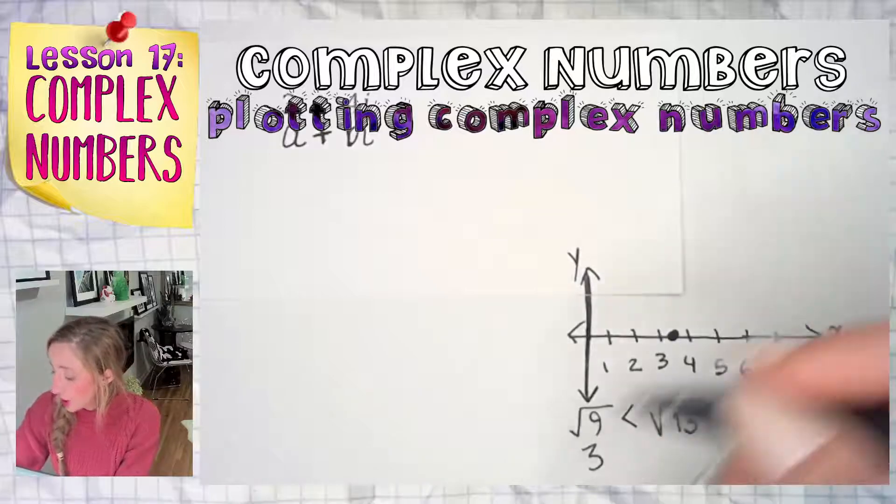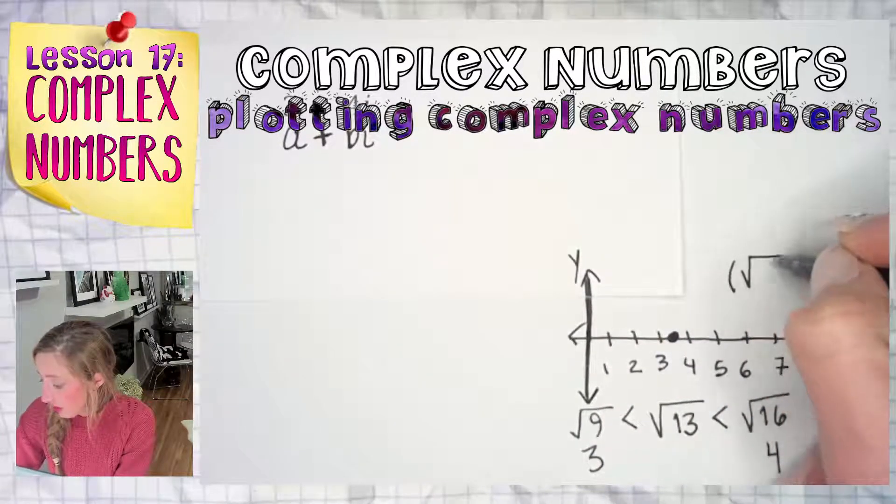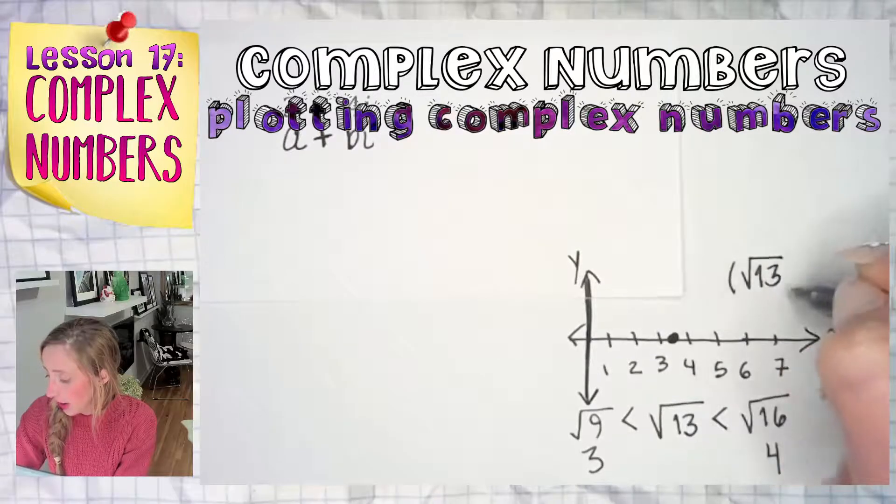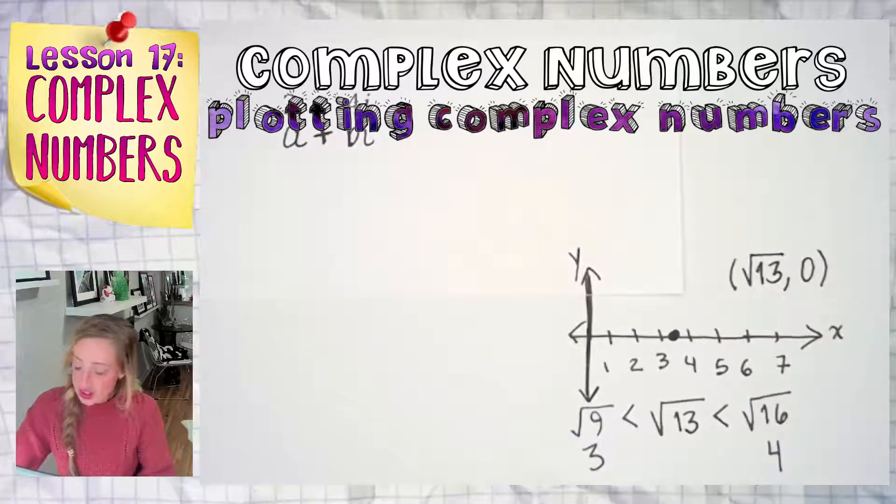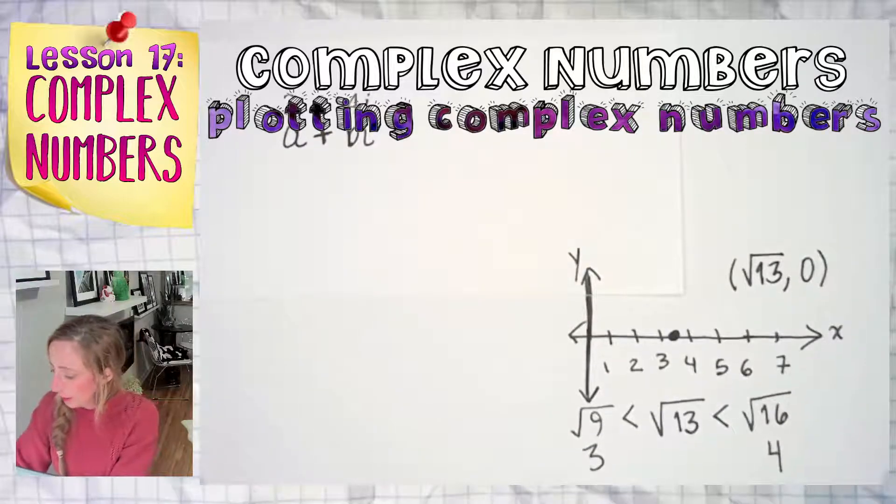So if I wanted to change it up and make it into an ordered pair, I could keep that exact same dot and I would call that square root 13, comma, zero. So the square root of 13 is the x value and the zero is the y value and it happens to be that same dot over there.